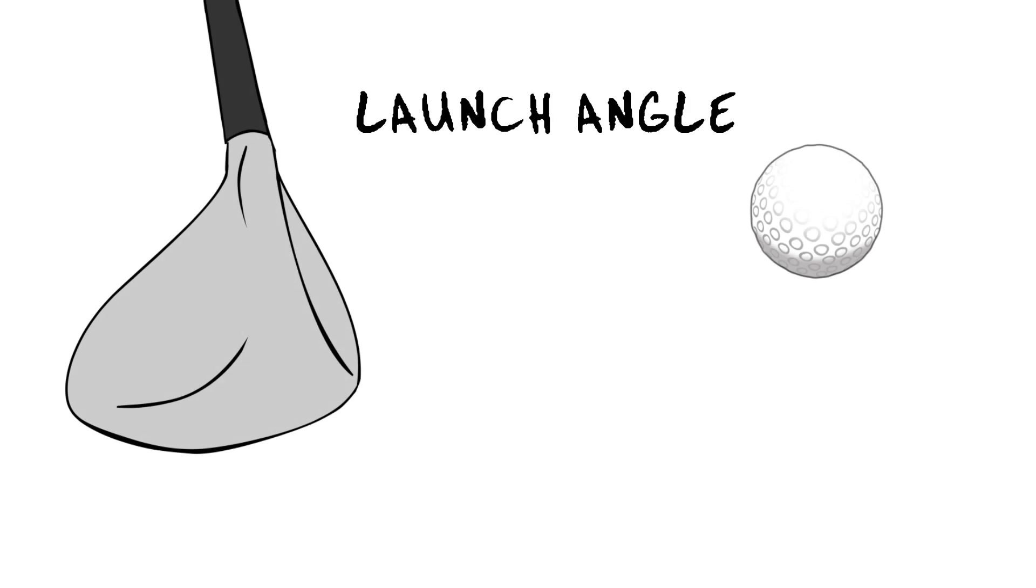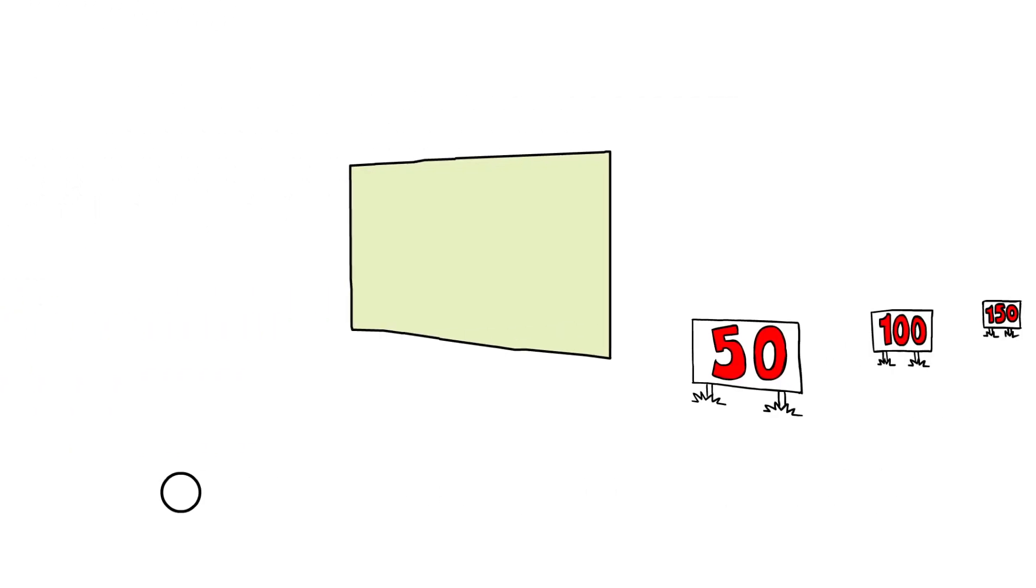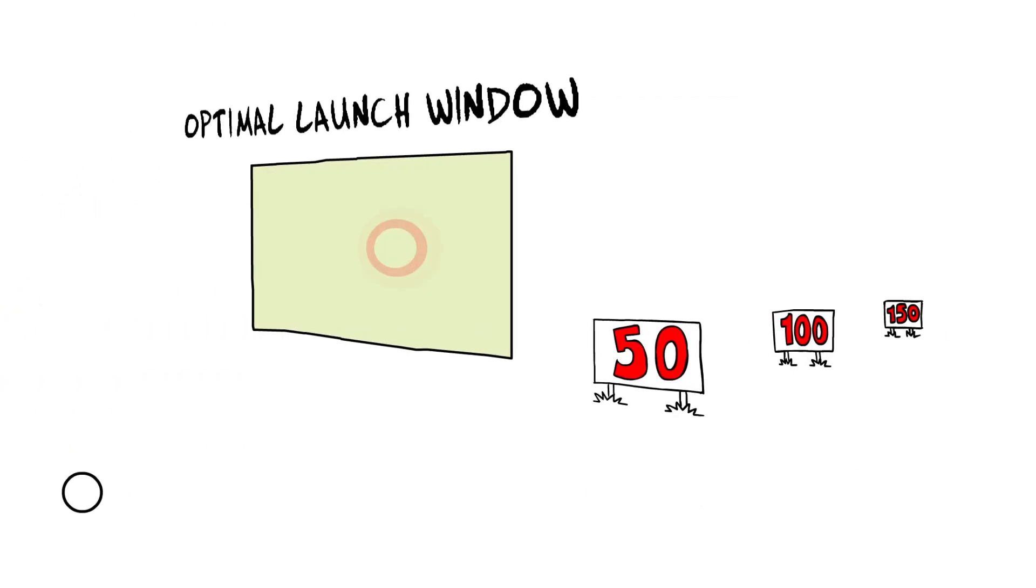The launch angle measures the vertical angle of the golf ball in relation to the ground as it leaves your club face. It has the greatest impact on how high the ball flies. With higher launch angles, you see higher shots. Ideally, your shot will have an optimal launch angle, which means they are not too high or too low.